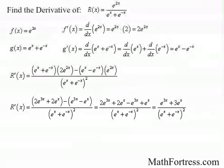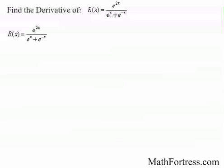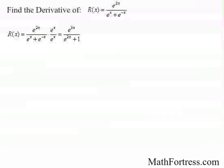Here's a different way of solving the problem. We can actually use algebraic manipulation to rewrite the expression in a different form. Starting with r of x, we can multiply it by e to the x over e to the x, which equals 1, so we are not changing the overall expression. So r of x can be rewritten as e to the power of 3x over the quantity e to the power of 2x plus 1. We still need to apply the quotient rule, so we need to find the derivatives of the numerator and denominator.